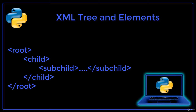XML trees start at a root element and have branches to child elements. All elements can have child elements, also known as sub-elements. The relationship between objects is described by the terms parent, child, sibling, and sub-child. A parent is an element with children. A child is an element with a parent. A sibling is an element on the same level as another element. A sub-child is the child of a child.